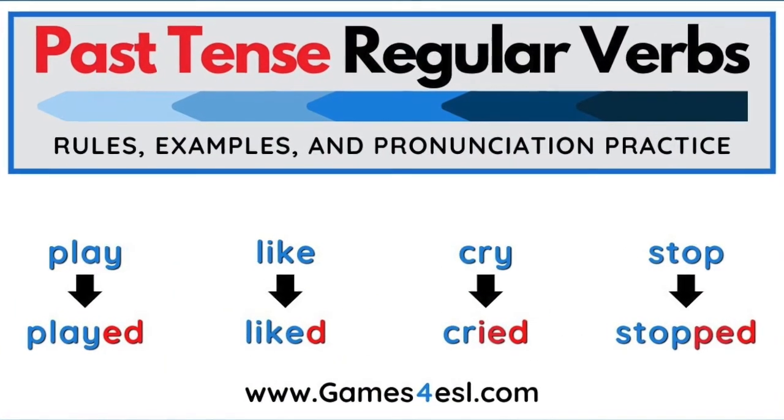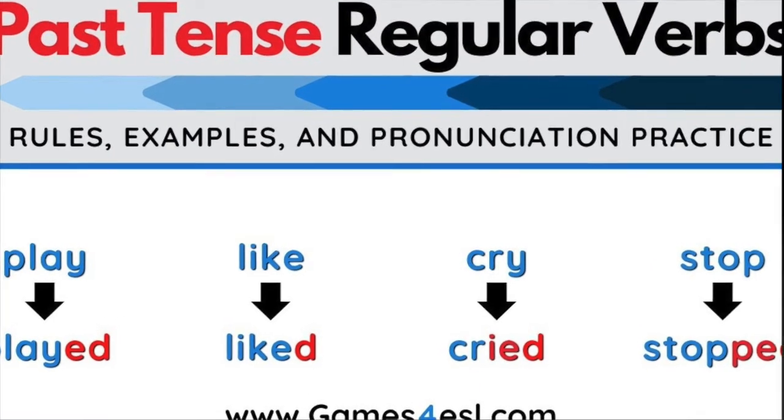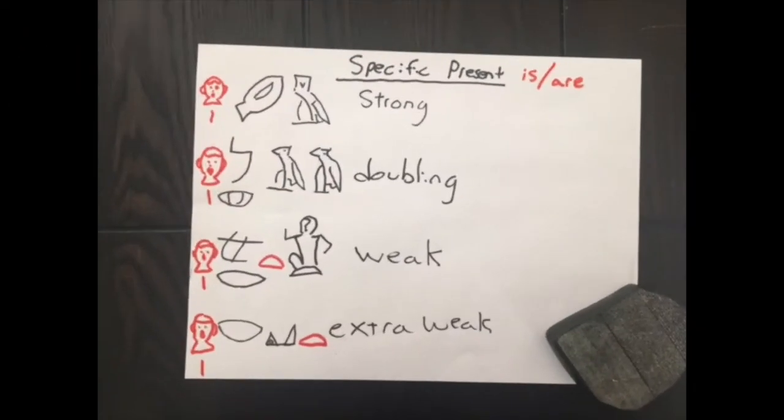And today we are going to get into the past tense, which is one of the most important tenses for ancient Egyptian because it all takes place in the past.